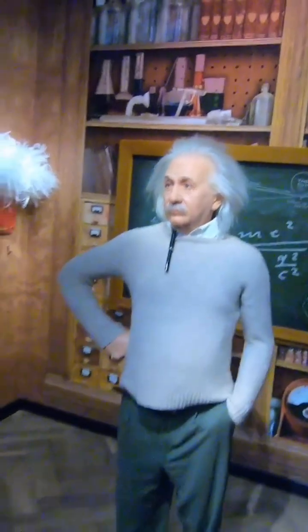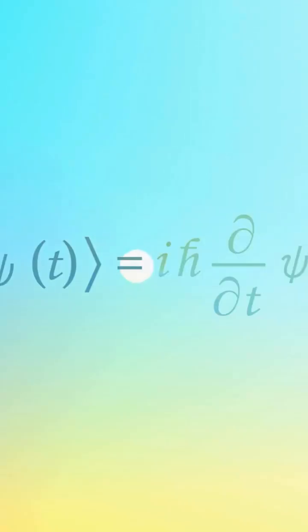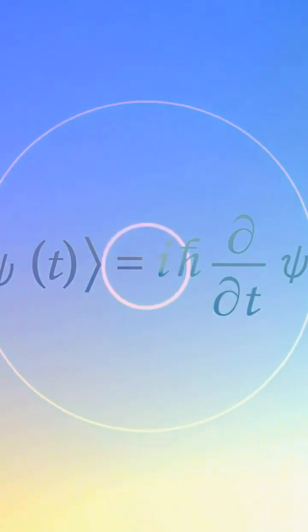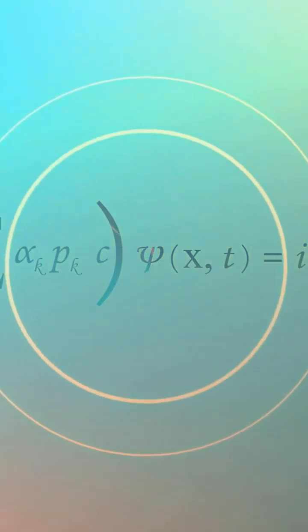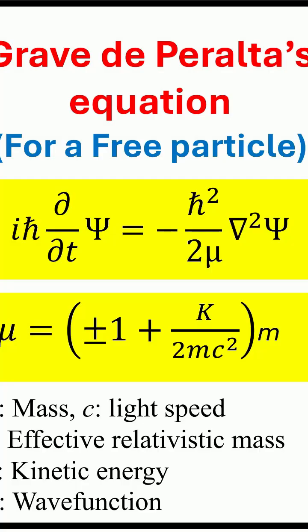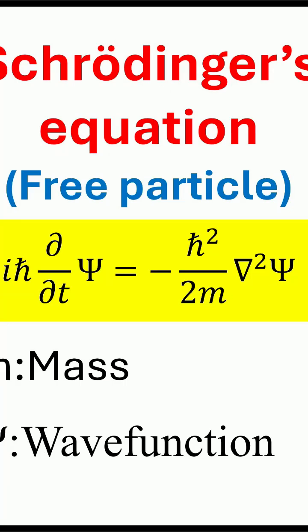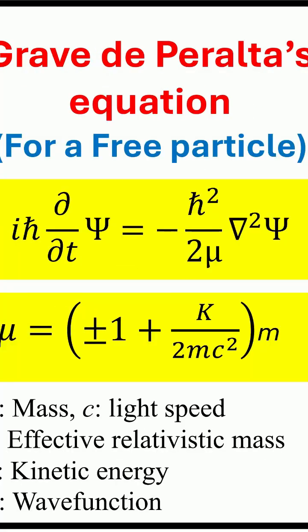The wave equations that should be solved are very well known. However, they are different depending on several factors. When quantum mechanics emerged a century ago, physicists were already familiar with Einstein's special theory of relativity. This led to the development of two sets of wave equations. In non-relativistic quantum mechanics, the Schrödinger and Pauli equations were crafted. Meanwhile, relativistic quantum mechanics saw the discovery of the Klein-Gordon and Dirac equations. Recently, the Grave de Peralta equations have been unveiled. These equations are both Schrödinger-like and relativistic, offering a unified mathematical approach to both non-relativistic and relativistic wave equations.